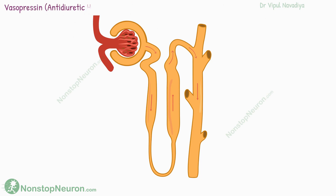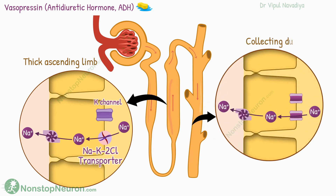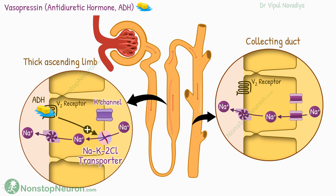Now the effect of vasopressin, or antidiuretic hormone. Its effects are seen at the thick ascending limb and collecting duct. It acts via the V2 receptor located on the basolateral membrane. In the thick ascending limb, it stimulates the apical sodium-potassium-2-chloride cotransporter and potassium channels. At the collecting duct, it increases the number of open sodium channels at the apical membrane. This increases sodium reabsorption.